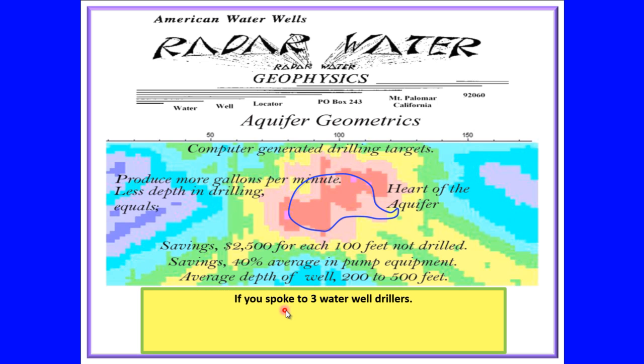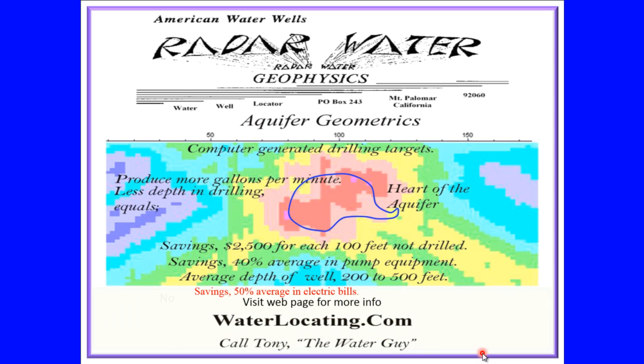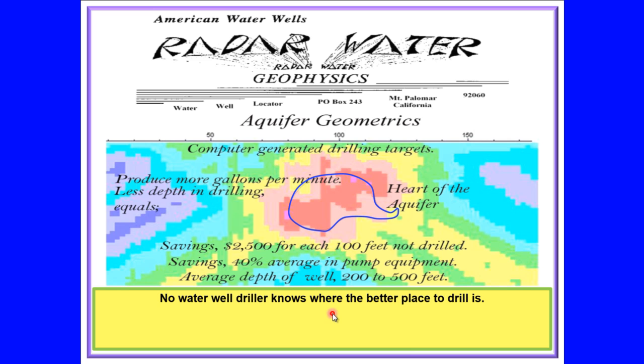If you spoke to three water well drillers, you would select a driller that convinces you more so that he will find you the water. If so, then ask the driller, how much water will I get and how deep will the well be? No water well driller knows where the better place to drill is. Wherever you drill on earth you will receive some water, something, or just squat.